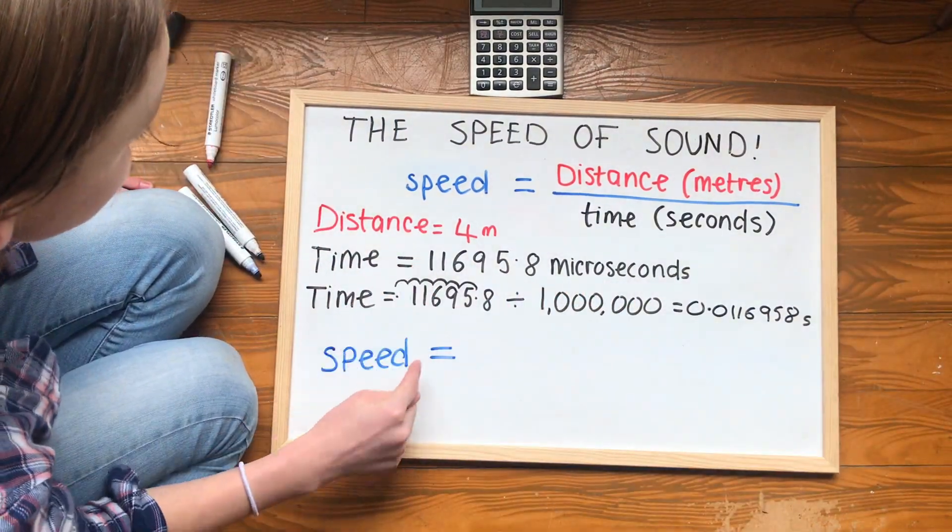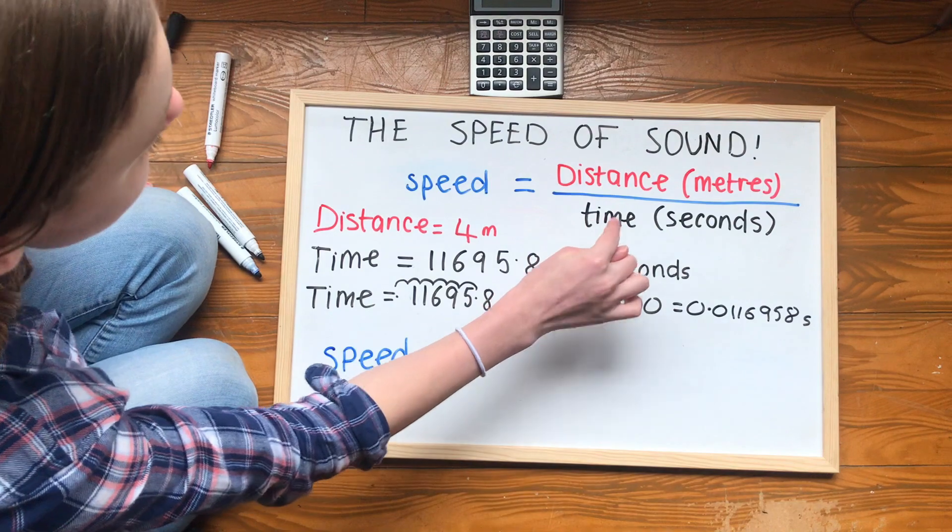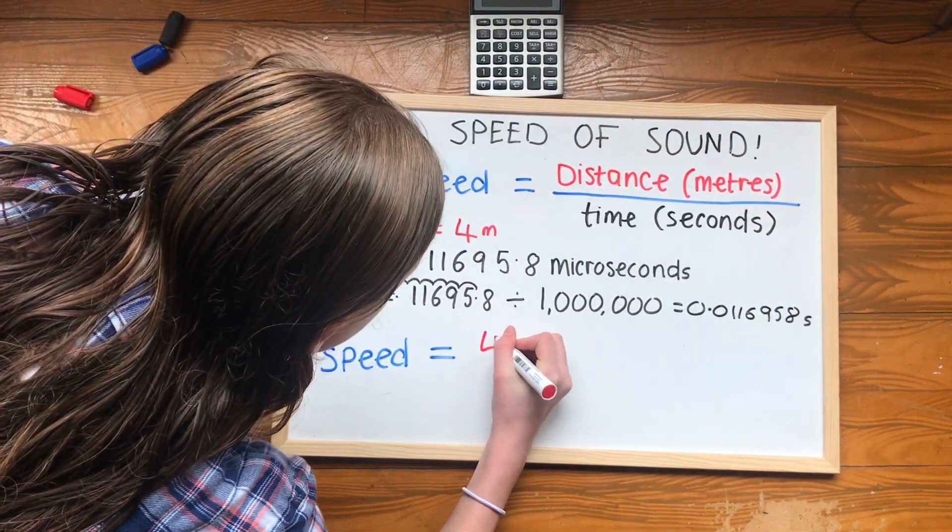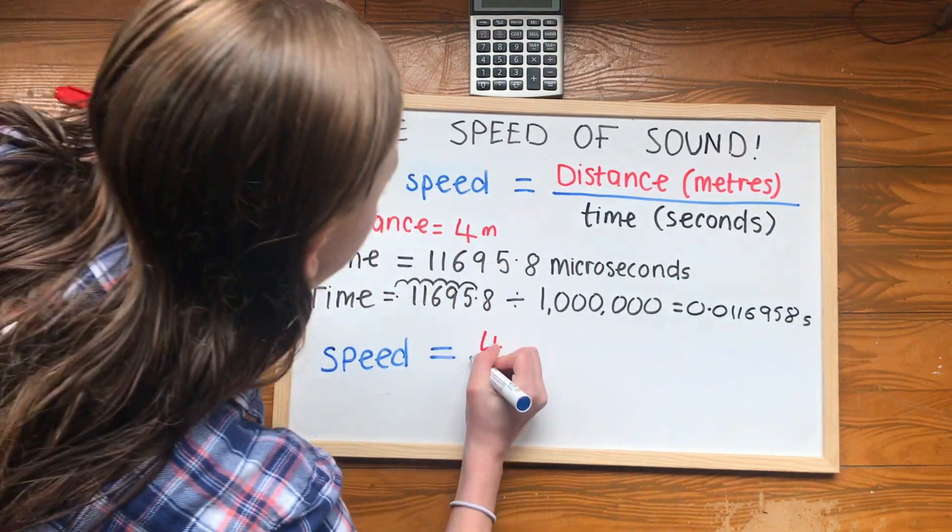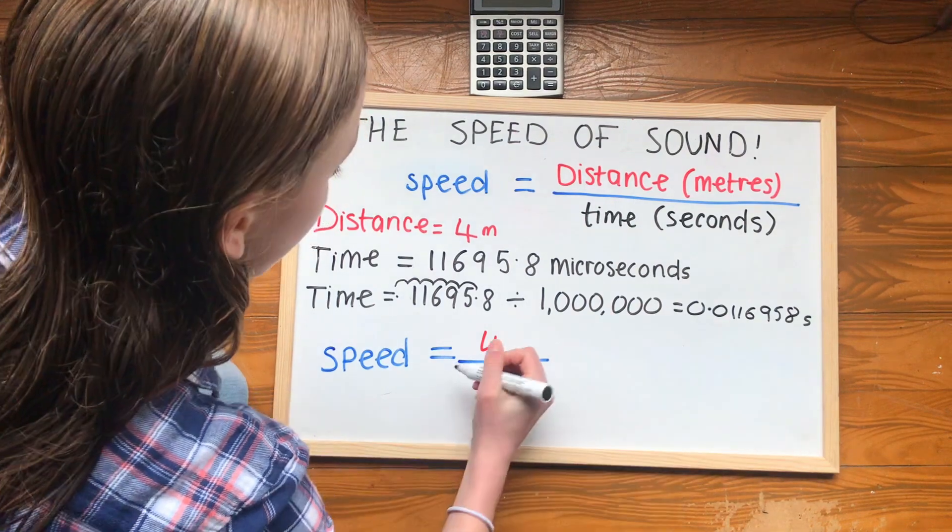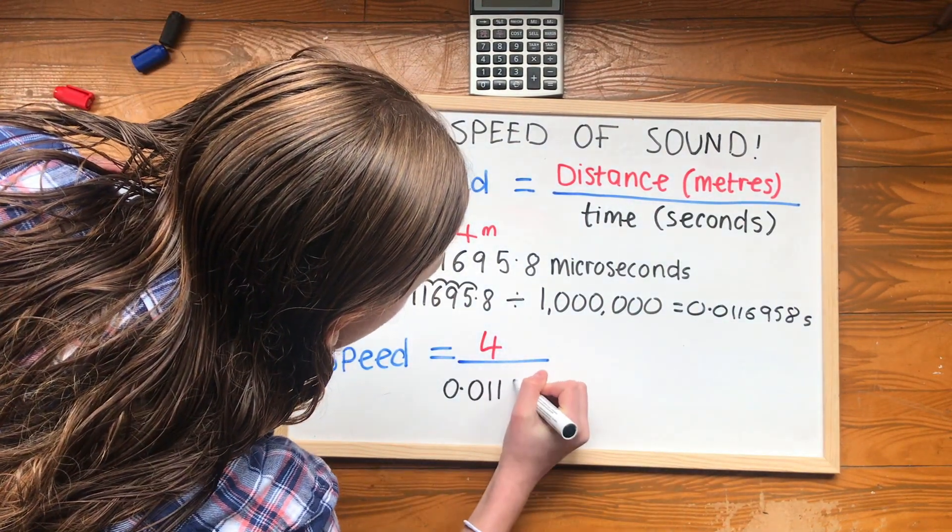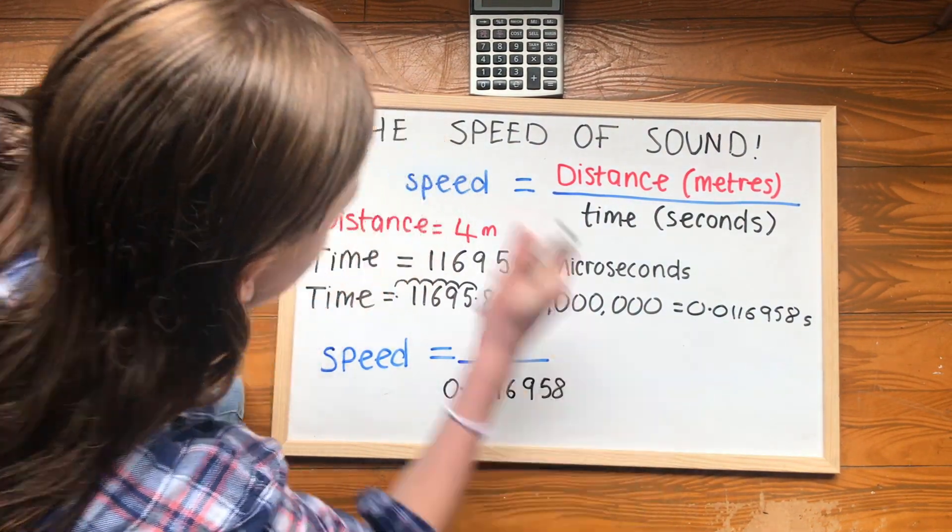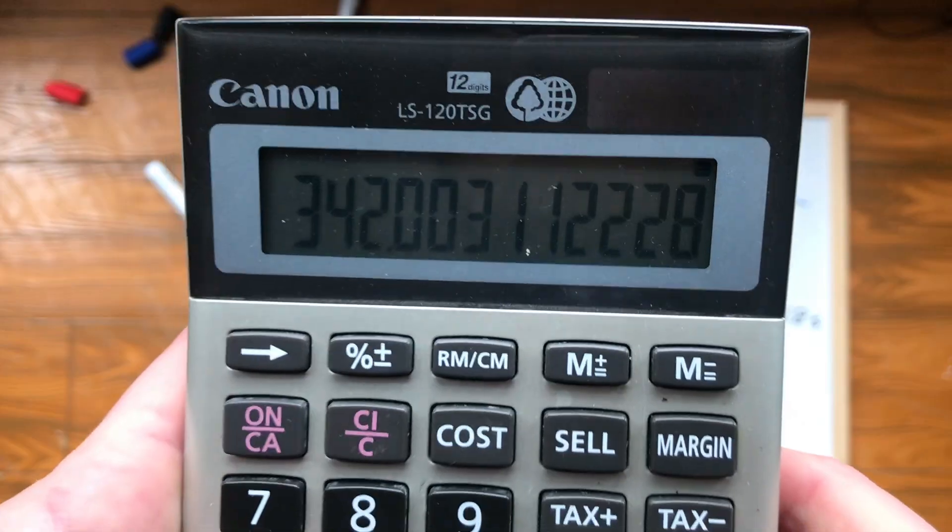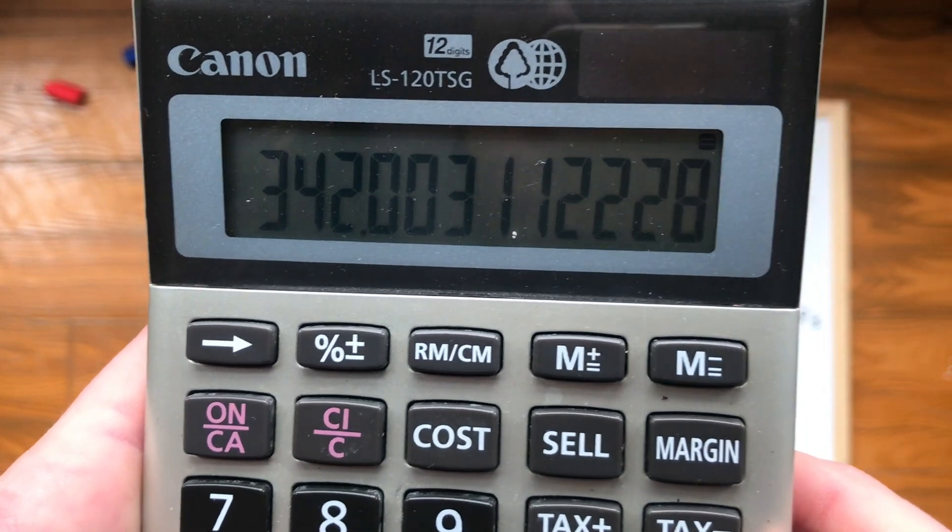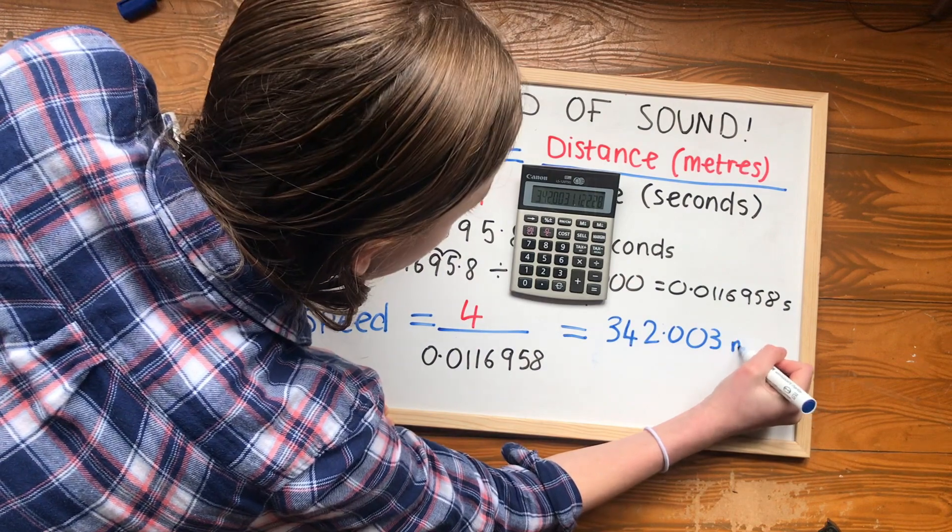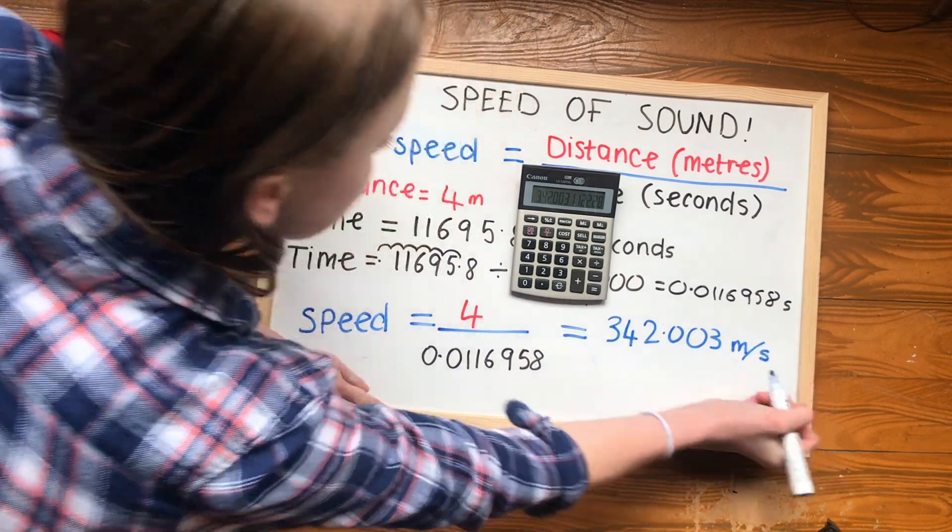Finally, speed is equal to distance in metres divided by time in seconds. So our distance is 4 metres divided by our time in seconds, which is here. 0.0116958 seconds. Equals, we get our calculator out, 342.003. 342.003 metres per second.